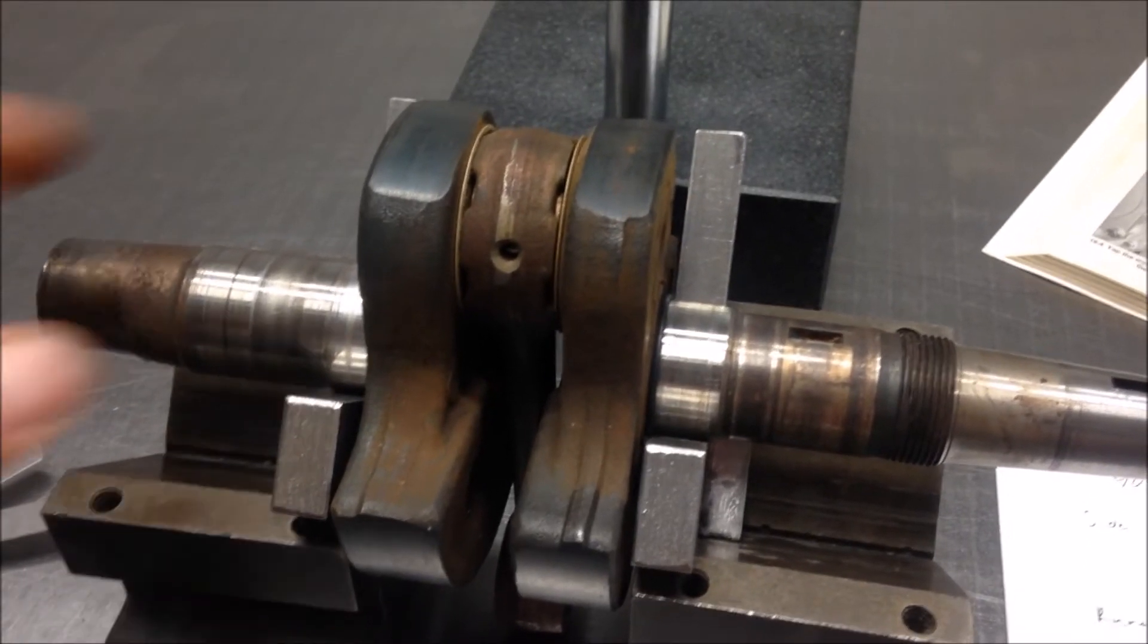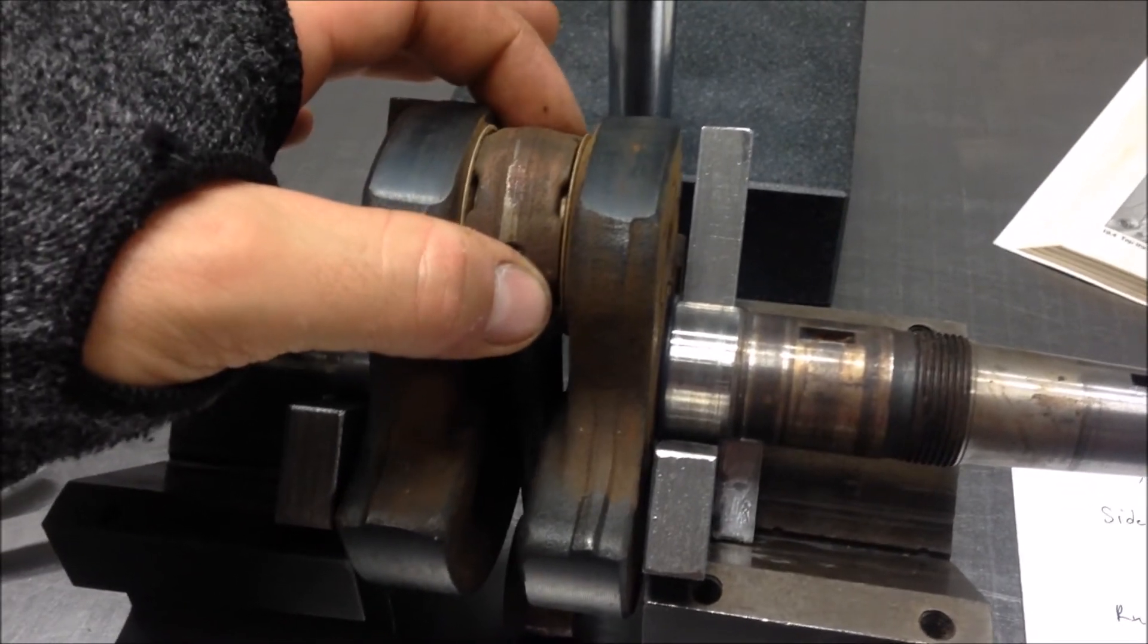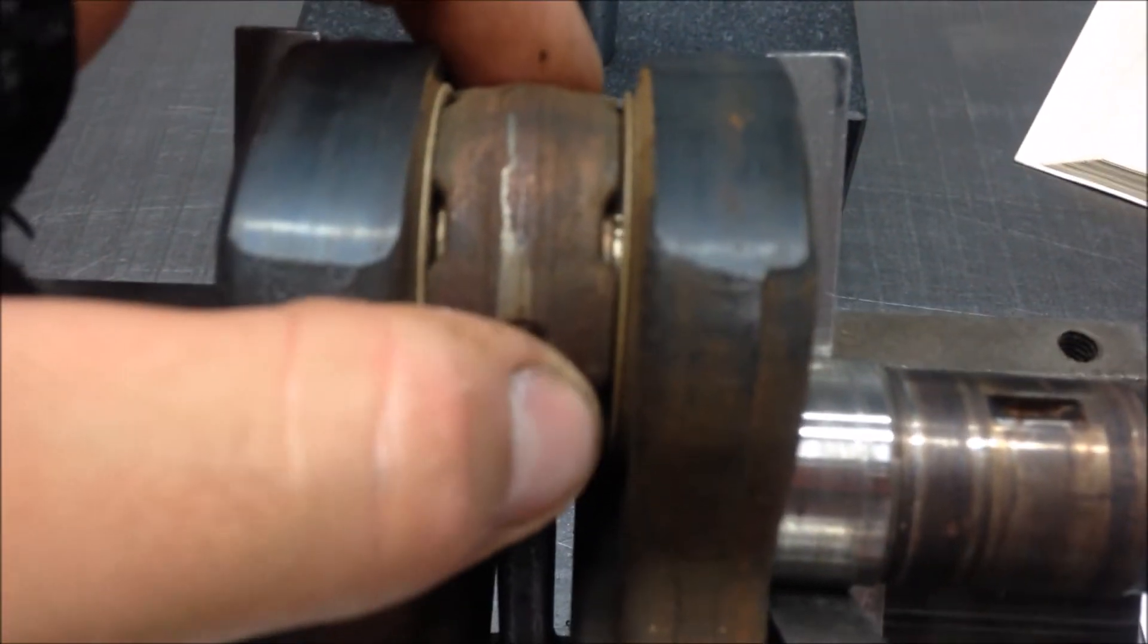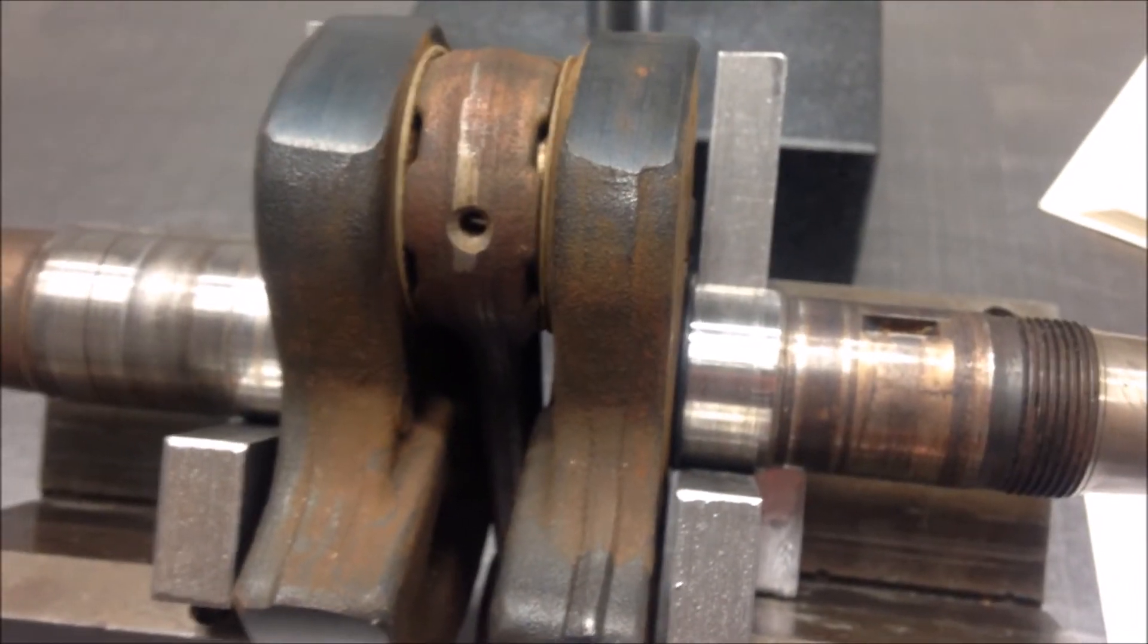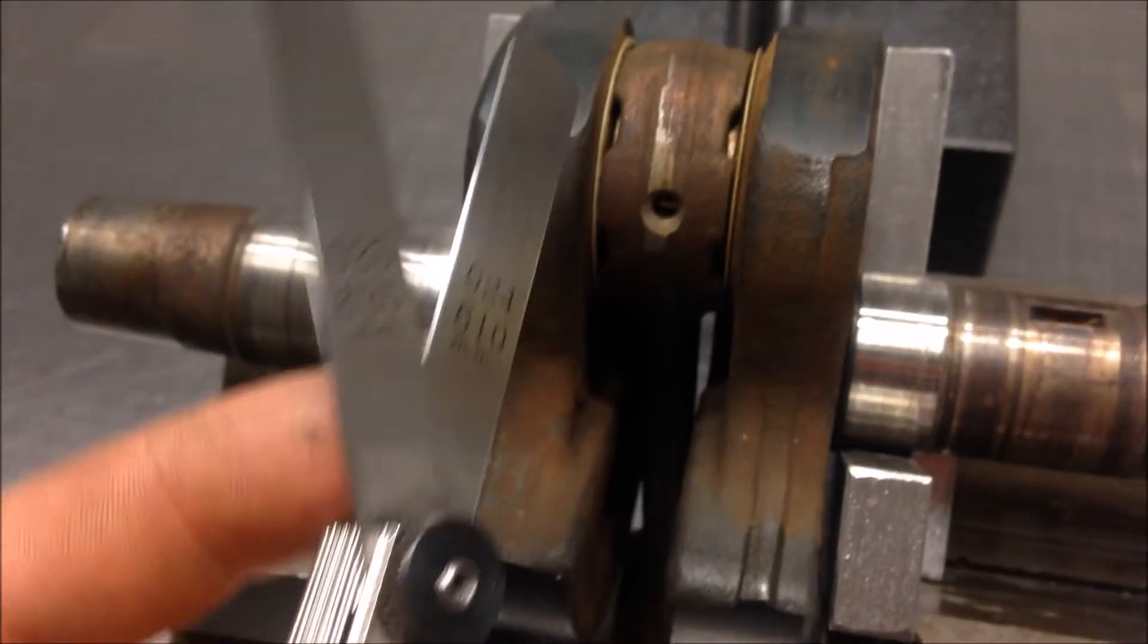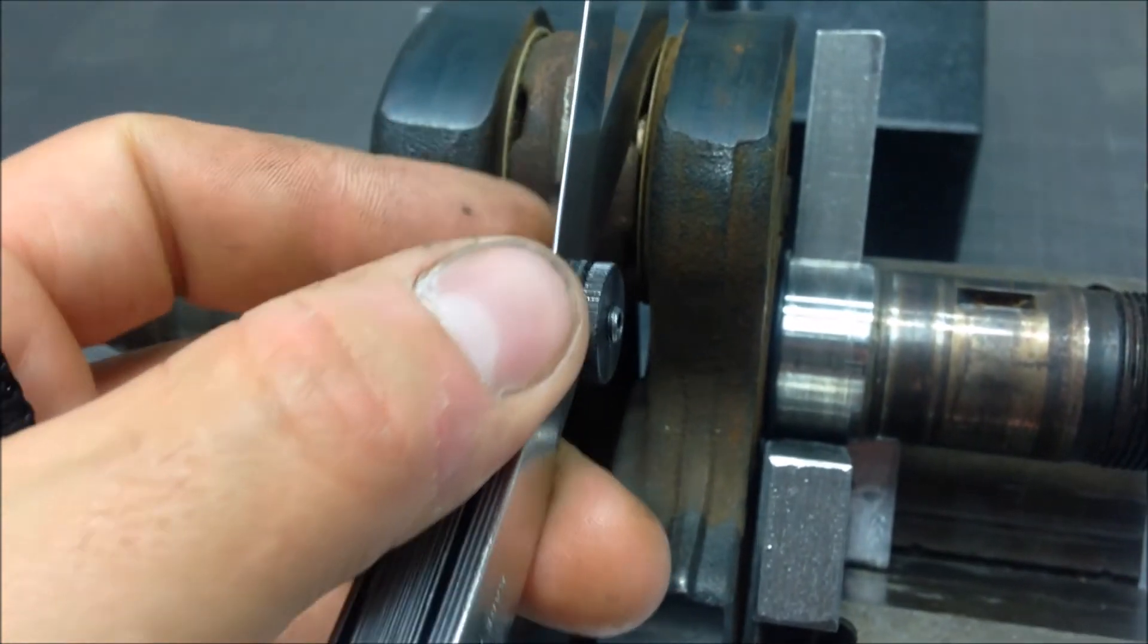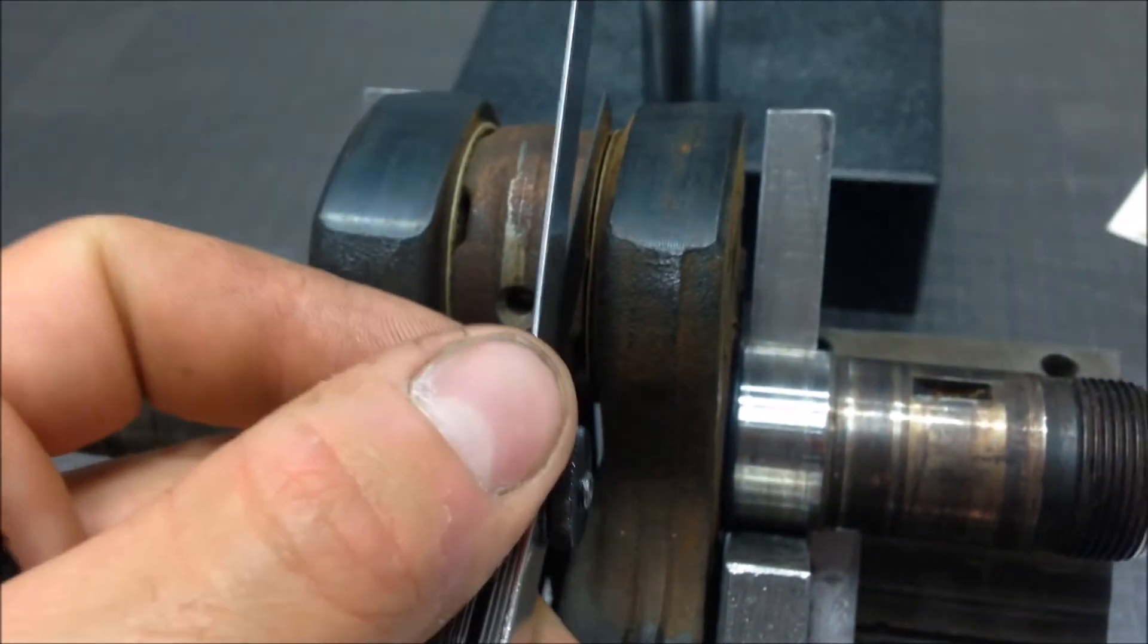First thing we're going to want to check is your connecting rod side clearance. See how that moves side to side. In order to do this, you'll take your feeler gauge and slide it in between the washer and the connecting rod.